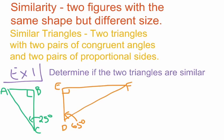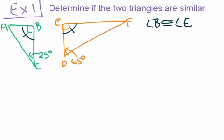Right away, we should see that angle E and angle B are congruent to each other — that's one pair of congruent angles. We know they're congruent because they're both 90 degrees. Based on the boxes in the corner, we know those angles are both right angles. So angle B is congruent to angle E. Now we need to show one more pair of congruent angles.